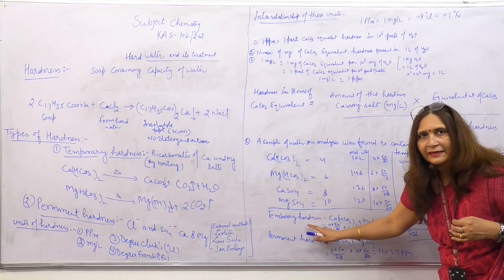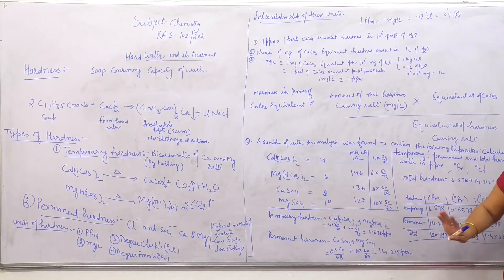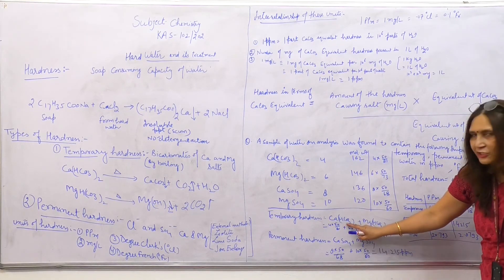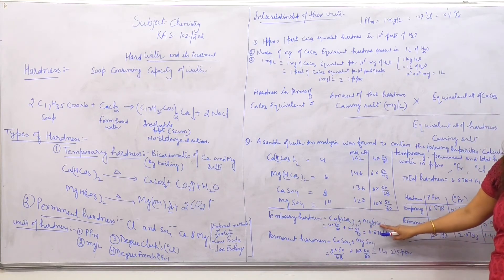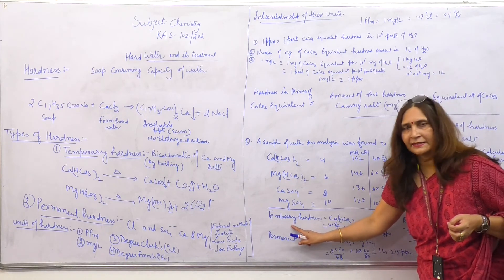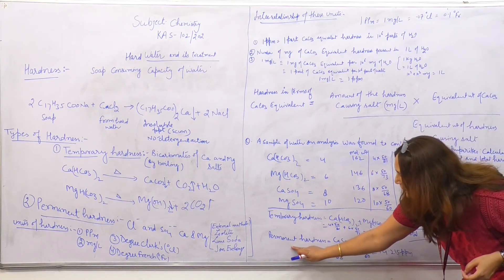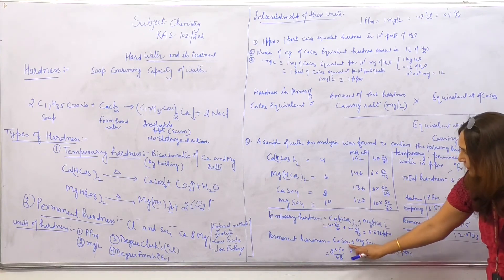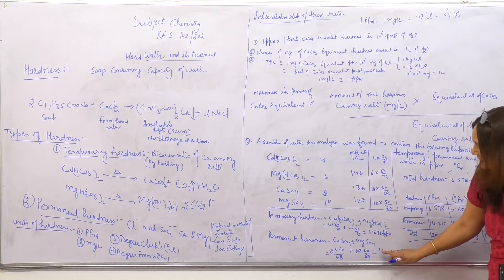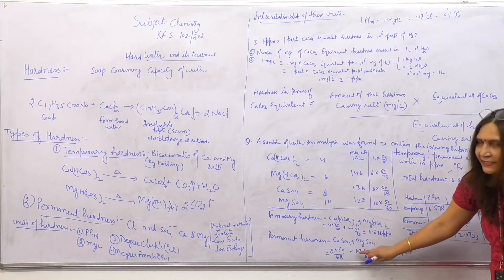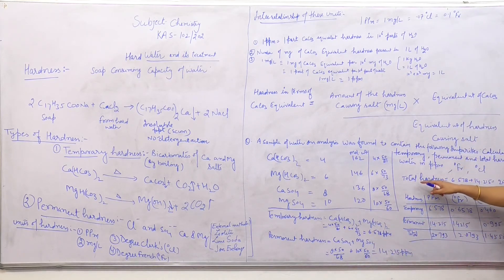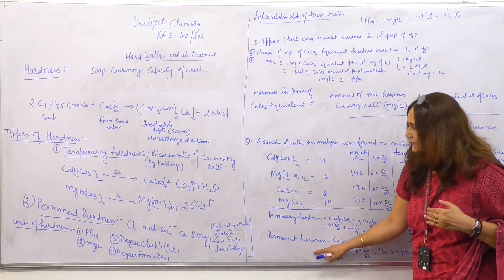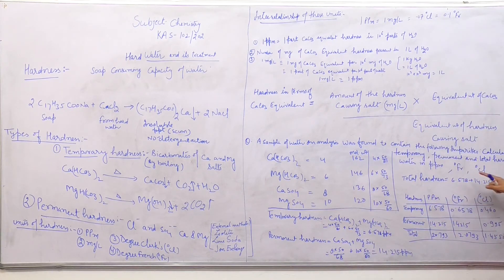Temporary hardness includes bicarbonates of calcium and magnesium, so it equals the CaCO₃ equivalent of calcium bicarbonate plus magnesium bicarbonate. Permanent hardness includes chlorides and sulfates of calcium and magnesium, so it equals calcium sulfate plus magnesium sulfate contributions. Total hardness equals temporary hardness plus permanent hardness.